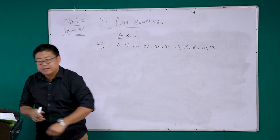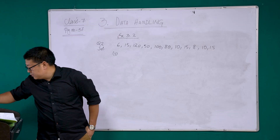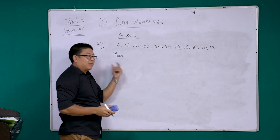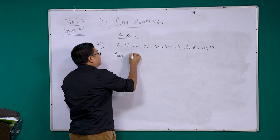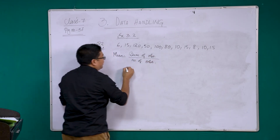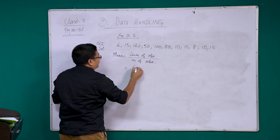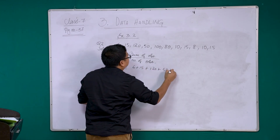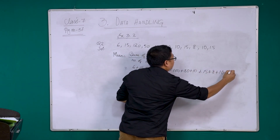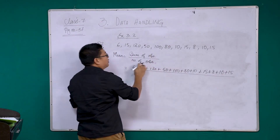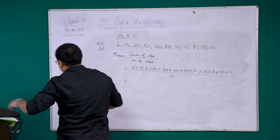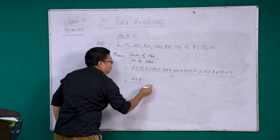In the first step we will be finding the mean. The formula is sum of observations divided by number of observations. Here, sum of observations means you have to add all these values: 6 + 15 + 120 + 50 + 100 + 80 + 10 + 15 + 8 + 10 + 15, divided by 11. If you add all these, you get 429 divided by 11.